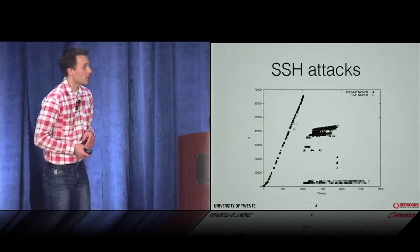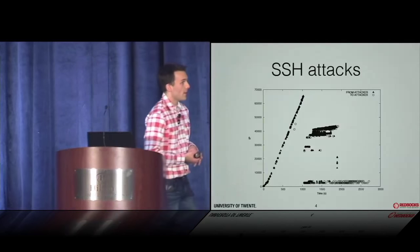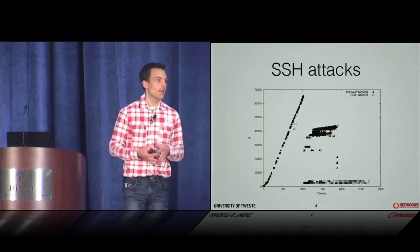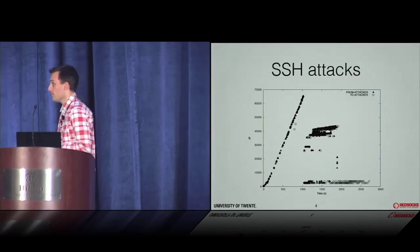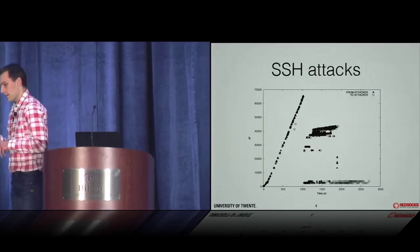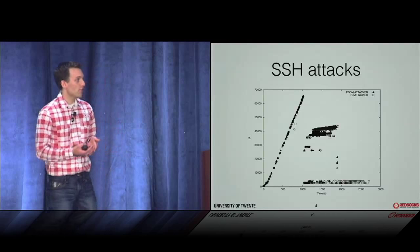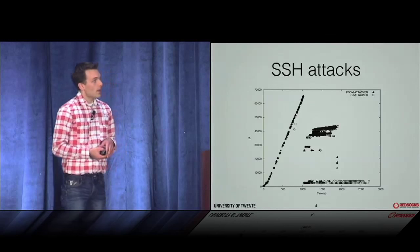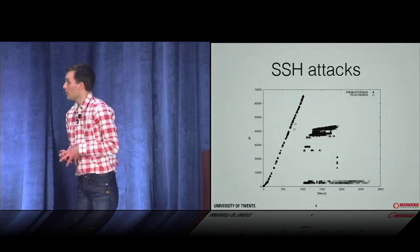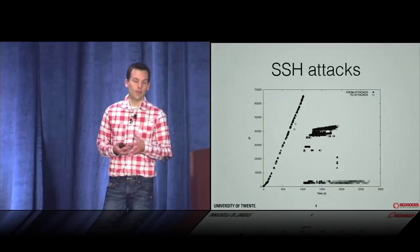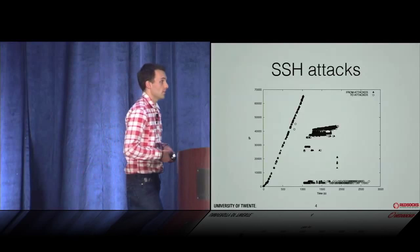This plot was produced by a colleague who has worked in the area of SSH attacks, detecting brute force attacks on flow data many years ago. On the x-axis we see time; on the y-axis we see IP addresses — roughly 65,000 IP addresses. This is a /16 university campus network.